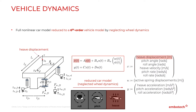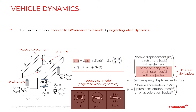The state vector is comprised of heave displacement, pitch angle, and roll angle, as well as their first-order derivatives: heave velocity, pitch rate, and roll rate.